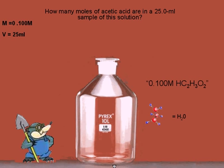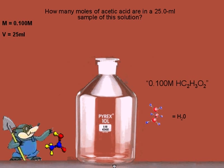The label 0.100 molar HC2H3O2 tells us that the solute is acetic acid, and that 1 liter of solution contains 0.100 moles of acetic acid.